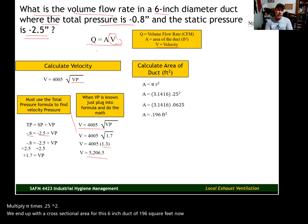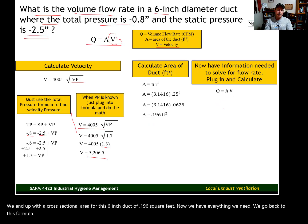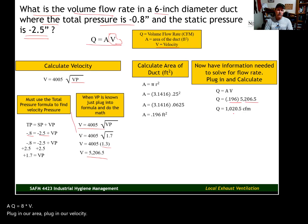Now we have everything we need. We go back to this formula. Q equals A times V. Plug in our area. Plug in our velocity. And we end up with a volume flow rate of 1,020.5 cubic feet per minute.